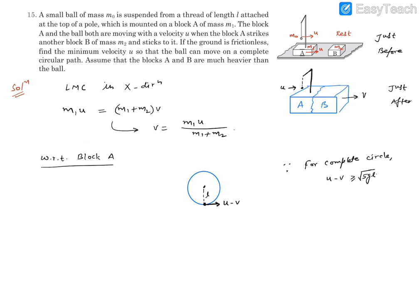Now if you use this along with this we will be able to find what the minimum value of u is going to be. So let's use that. This is going to be u minus v, v is m₁u divided by m₁ plus m₂, and this should be greater than or equal to root 5gL.